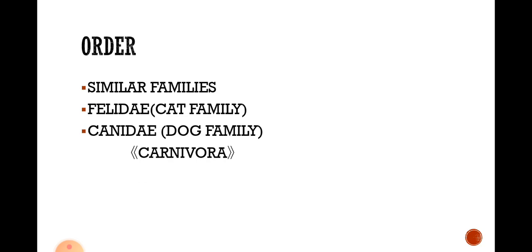The next category is Order. Similar families come under an order. For example, Felidae — the cat family — and Canidae — the dog family — both come under an order named Carnivora, meaning they are both dependent on other organisms for their food and energy.